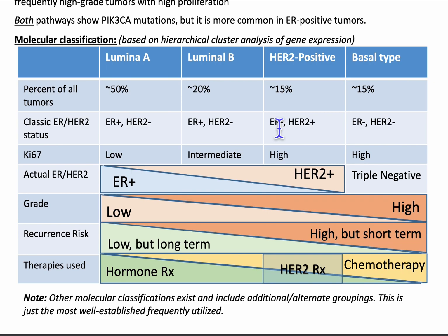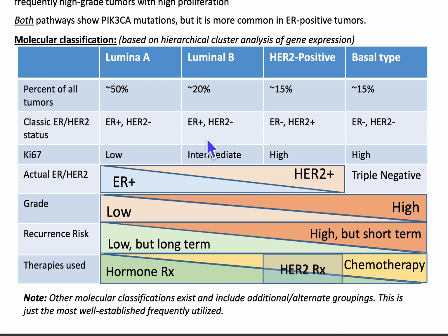Here is a schematic on one example of how breast cancers can be divided molecularly: Luminal A, Luminal B, HER2 positive, and basal type. Luminal A accounts for 50% of all tumors, 20% for Luminal B, 15% for HER2 positive, and around 15% for basal type. Luminal A and Luminal B are ER positive, HER2 negative, but for Luminal A the Ki-67 proliferation index will be low, whereas in Luminal B it will be intermediate. HER2 positive will be ER negative and HER2 positive, and basal type will be ER and HER2 negative — both will have a high proliferation index.